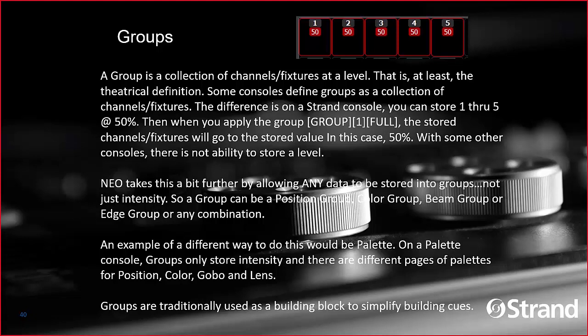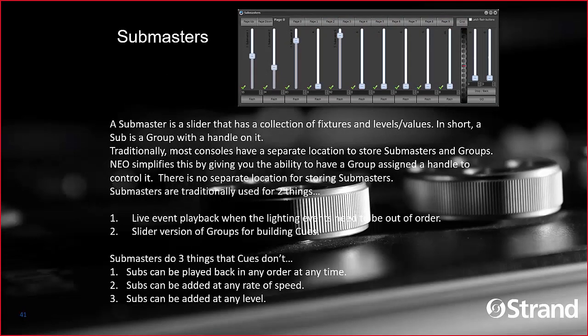A group is a collection of channels and fixtures at a level. Some desks don't include the level — Neo used to include all parameter data but now only includes intensity. Groups are building blocks to help the designer and programmer build cues. The designer is sort of painting with lights, using a bigger brush stroke than just grabbing one fixture at a time — you might grab your entire system of warm front lights, and a group is the perfect tool to collect all of those into one item.